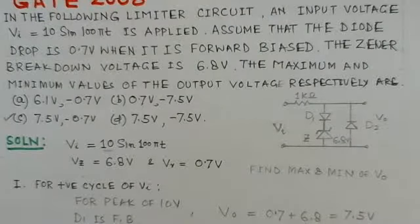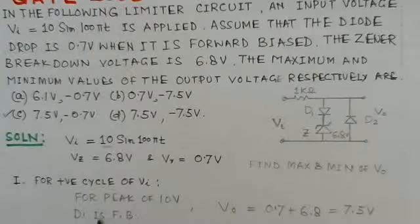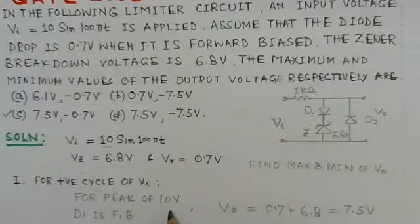So we start with the positive cycle of the input, that is VI. We know that the peak value of the input is 10 volts.